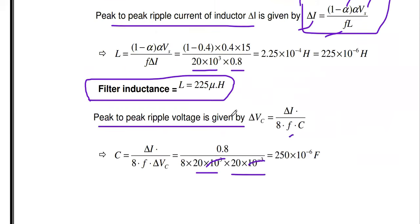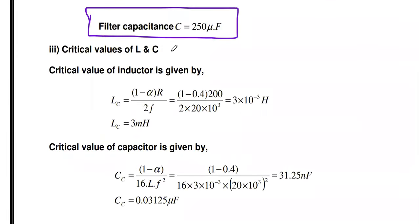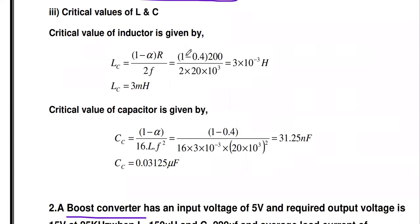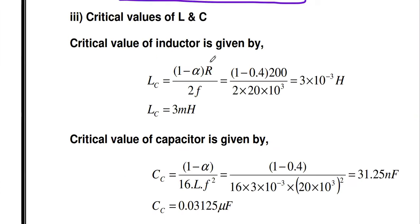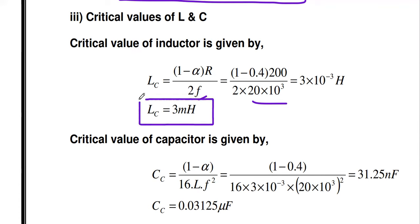Now find the critical value of inductor and capacitor. For the buck converter: Lc = (1 − α) × R / (2F) = (1 − 0.4) × 200 / (2 × 20 × 10³) = 3 × 10⁻³ H = 3 millihenry. This is the critical value of the inductor for the buck converter.